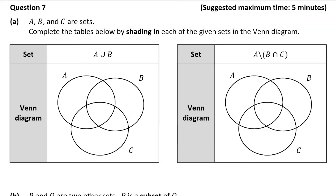We'll start with part A. We're told that A, B and C are sets and we have to shade in each of the given sets in the Venn diagrams on the tables below. The first set we're given is A union B, and essentially what the union means is just everything that's in A or B. It can be in either A or B, or it can be in both, but once it's in either A or B we count it in the set.